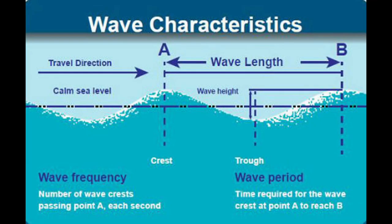As you can see in the graphic here, the wave length is measured from the peak of one wave to the peak of the next wave. The wave height is measured from the peak of one wave to the trough in between the two waves. The calm sea level is usually about halfway between the trough and the peak. The wave frequency is not spoken about much — it's the number of wave crests that pass a given point each second, and the higher the frequency the rougher it is as a general rule of thumb.